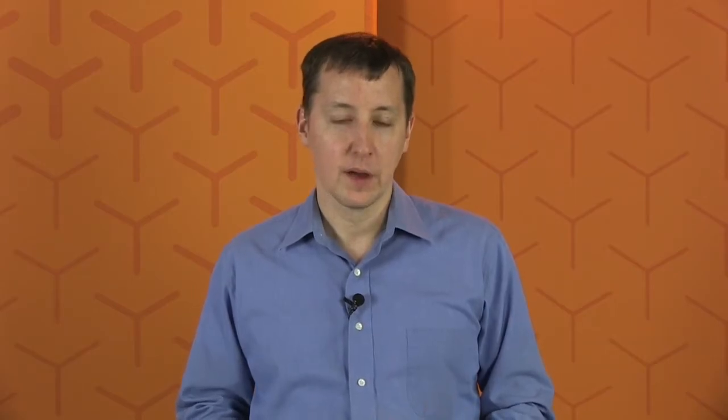QVBR is a rate control that adjusts to different kinds of content and scenes. The encoder is changing its quantization and bit rate in order to hit a consistent quality target. It uses the statistics already being generated to ensure optimal perceptual encoding. The key takeaway is that QVBR saves bits when the quality level for a given scene is reached, even if it's authorized to use more bits.